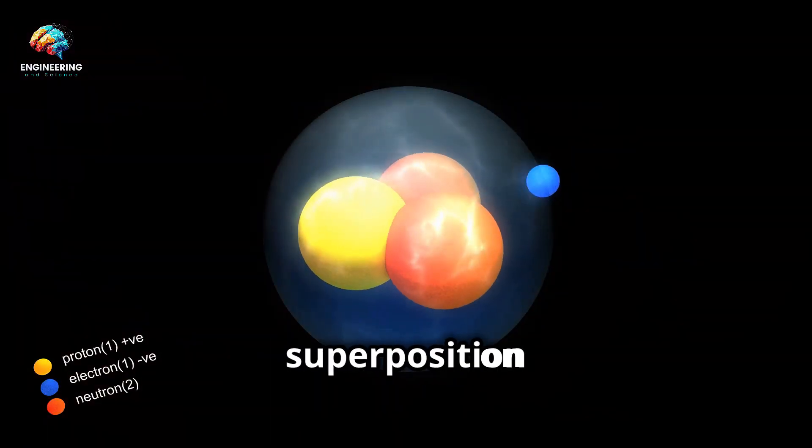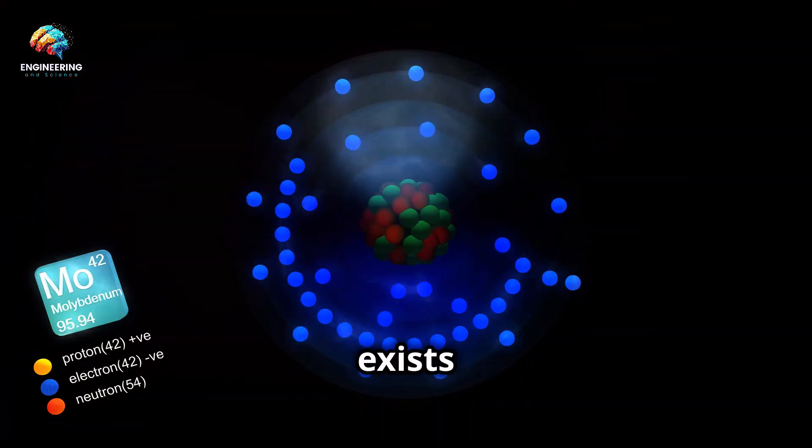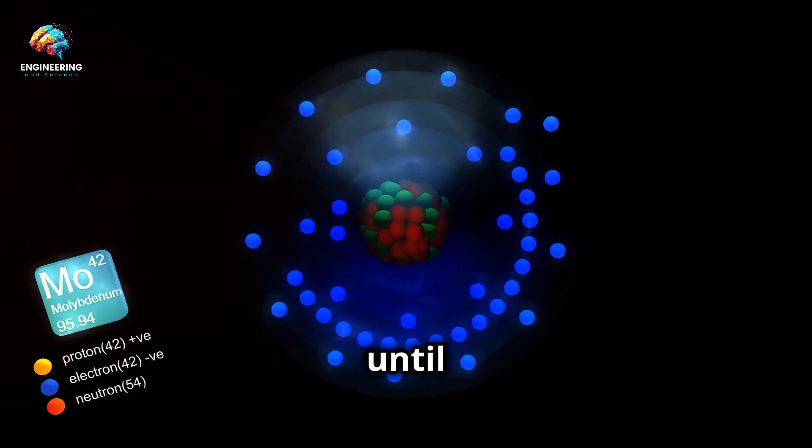A quantum particle, like an electron, can be in a superposition of states, meaning it exists in a combination of all possible states until it is measured.